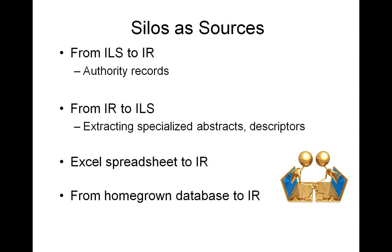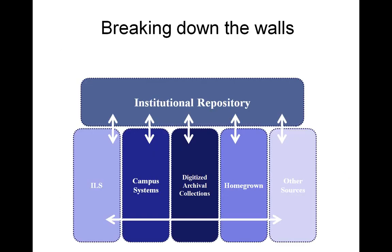Having the ability to share descriptive data across systems would enhance and create efficiencies in work currently being done. Even if the metadata you're starting with is not a complete record, at least you have some data to work with instead of starting from zero. So we encourage you to think about these systems as sources rather than silos. The next question becomes: how do we get the metadata from these sources into the IR and vice versa?